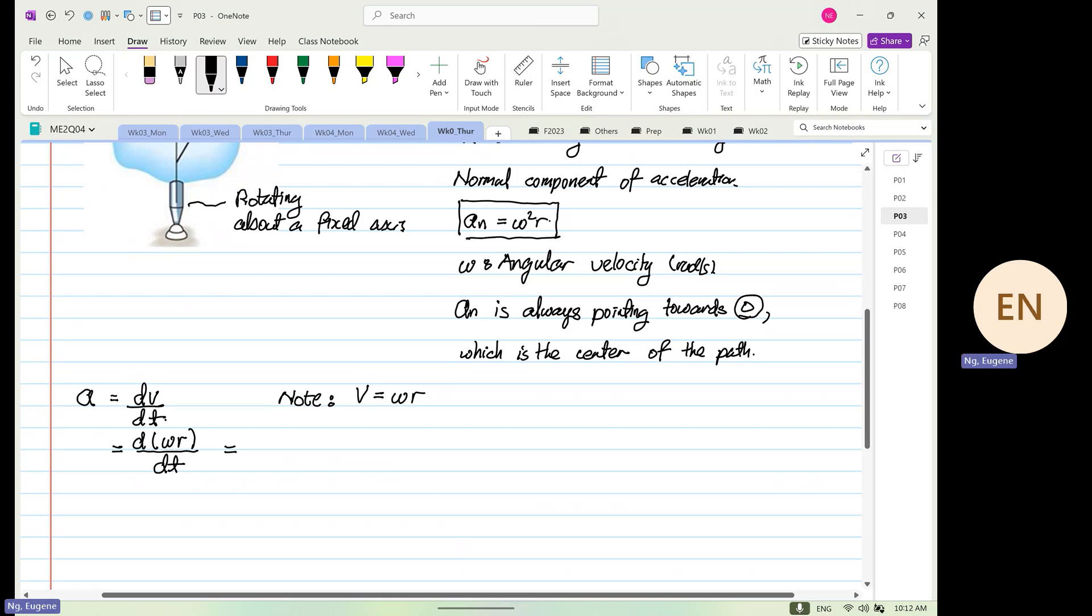So this corresponds equal to d omega over dt cross r plus by omega cross dr over dt. Important. What's so important is this over here, x corresponds to cross. Is it cross product in vector? Do you call that? Right. It's a cross product.